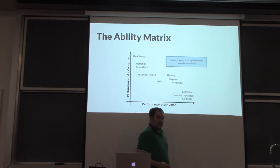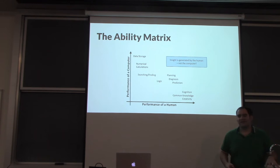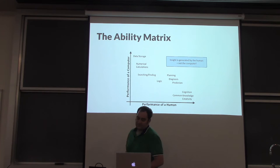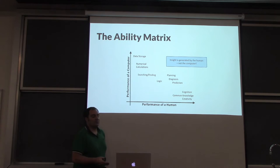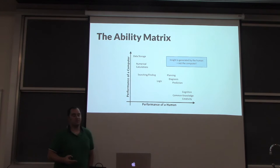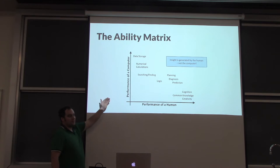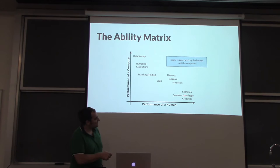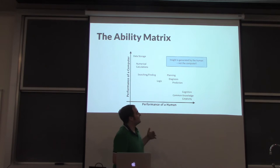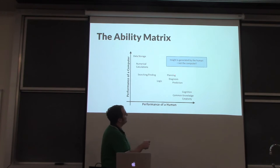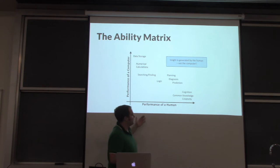I see visualization really as human-data interaction. There's always an aspect of a computer in visualization. Computers are way better than we are at storing information — a big matrix with a million cells, the computer handles it fine. Numerical calculation, searching, and finding are also computer strengths. But common knowledge, creativity, cognition, planning, diagnosis, and prediction are firmly in the human domain. Computers are getting better in those areas, but human performance is still important in important decisions.